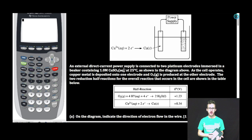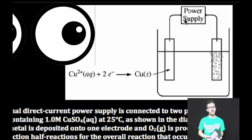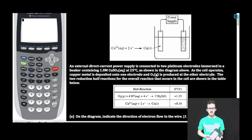An external direct current power supply is connected to two platinum electrodes immersed in a beaker containing 1.0 molar copper 2 sulfate at 25 degrees Celsius as shown in the diagram above. As the cell operates, copper metal is deposited onto one electrode and oxygen gas is produced at the other electrode. The two reduction half reactions for the overall reaction that occurs in the cell are shown in the table below.